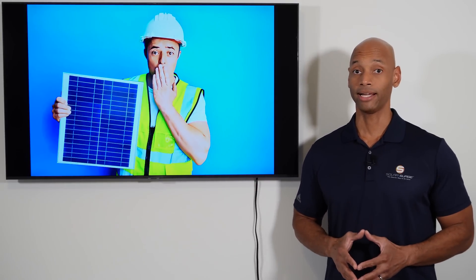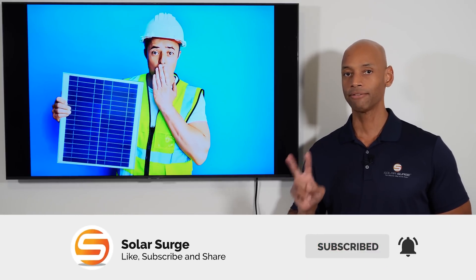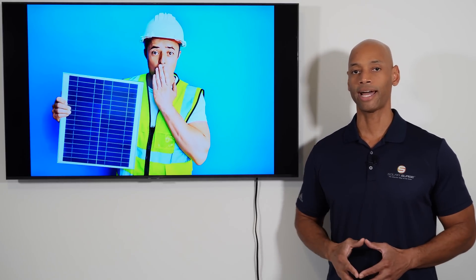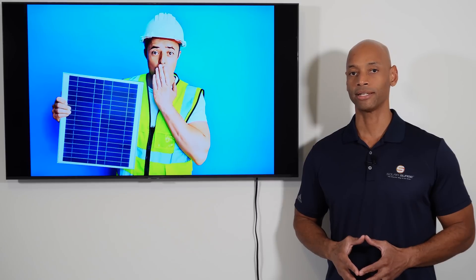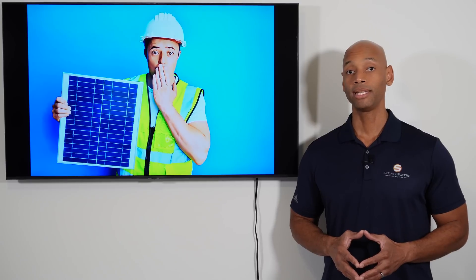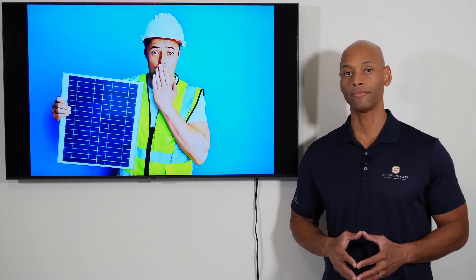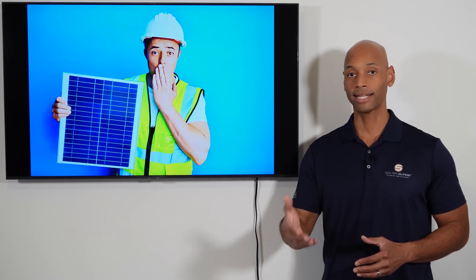The second red flag is if the contractor asks for a large cash deposit as a down payment. Most solar companies will have lines of credit set up with their major suppliers, meaning that if you sign a contract to have a solar system installed for your home, even if you intend to pay direct cash for the system and not use any kind of third-party financing...